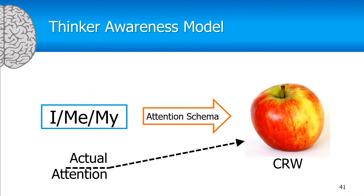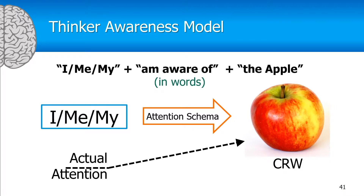This is the model of awareness for the thinker, and the thinker might express this awareness in a sentence like: I, me, my, am aware of the apple. So expressing it in words is: I'm aware of the apple.